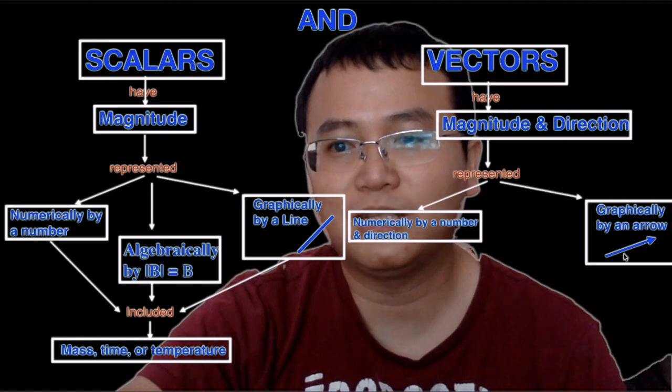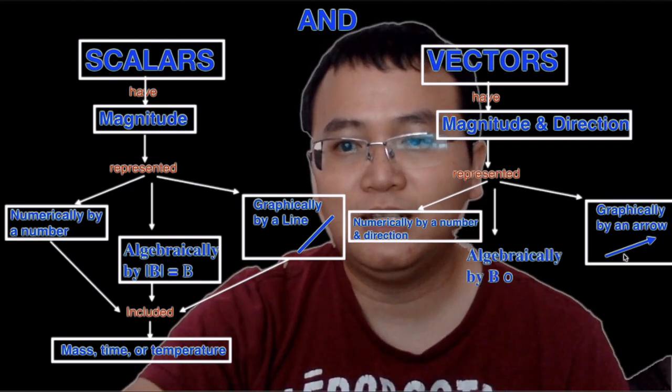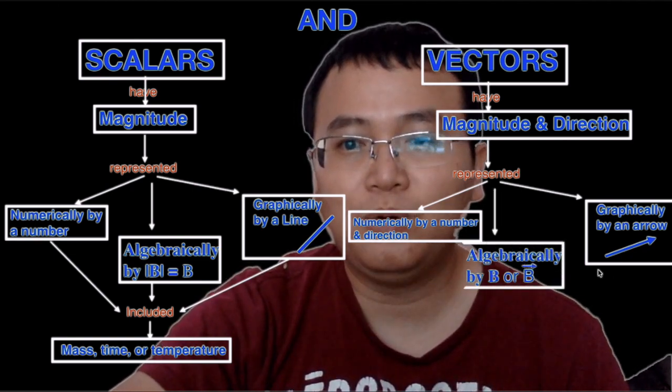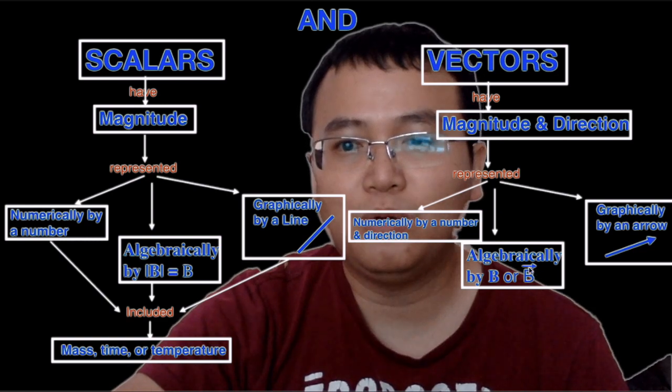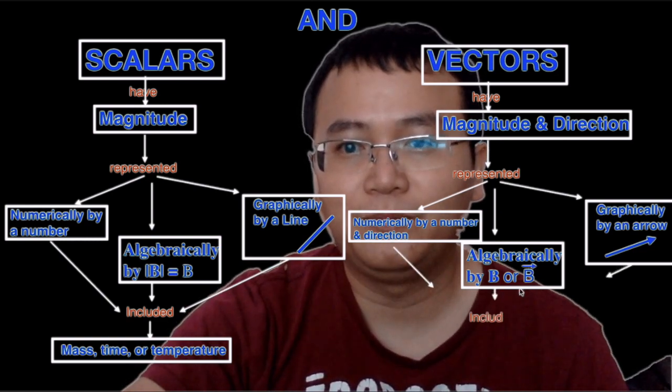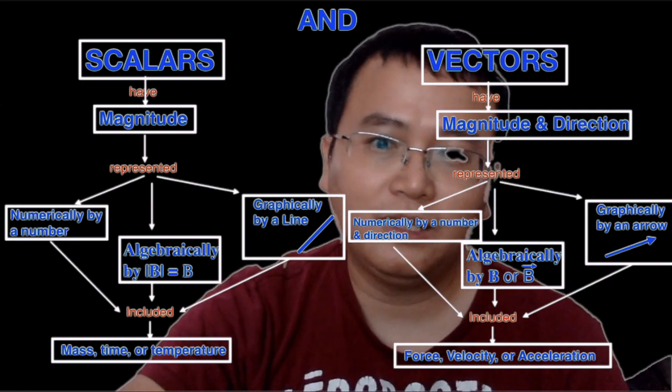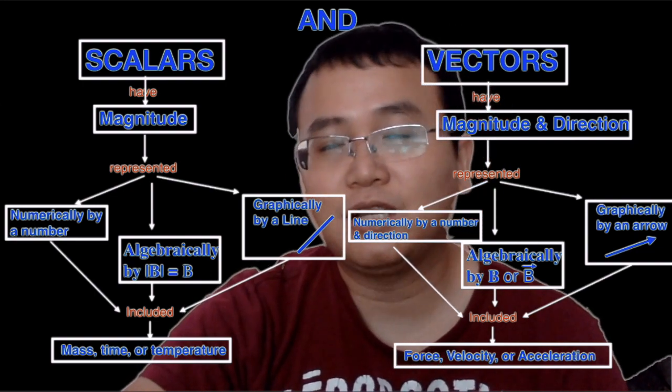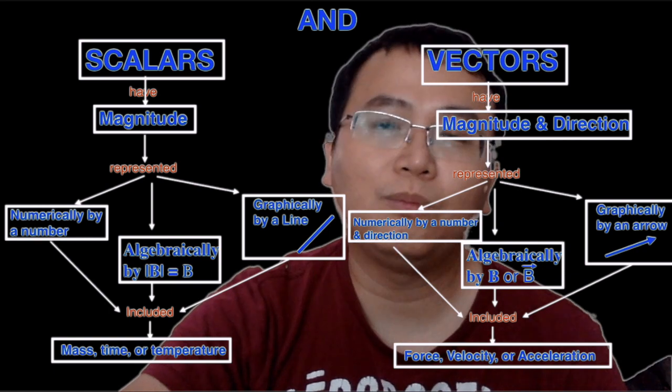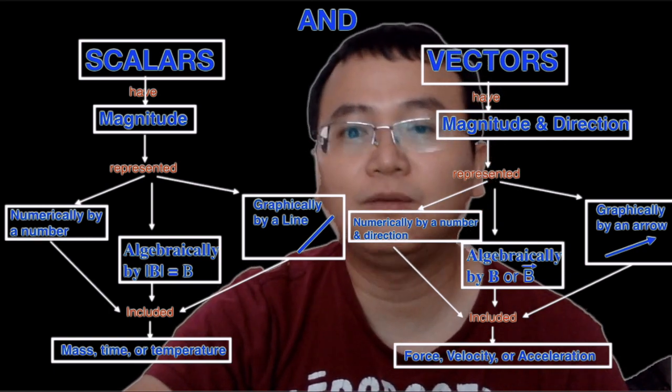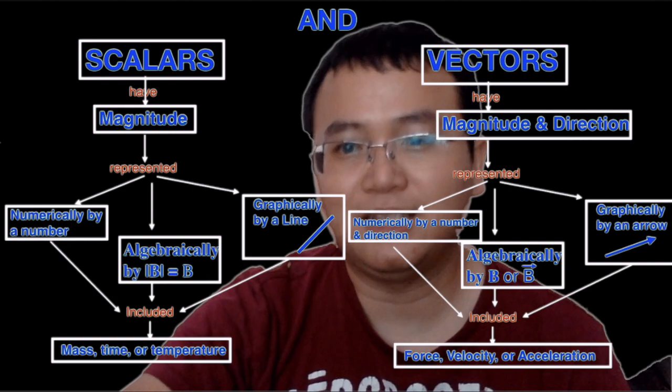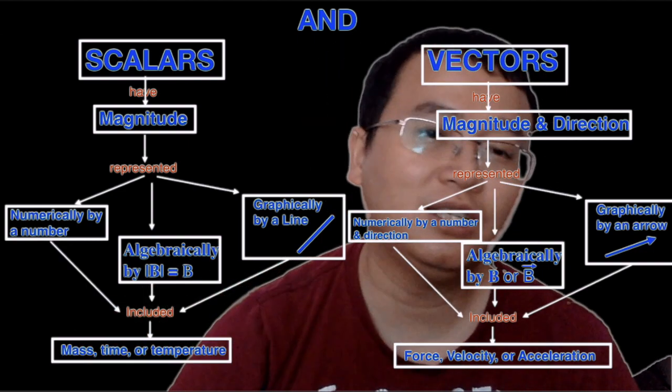That's where it's pointing at. Algebraically it's represented by a boldface symbol or a symbol with an arrow on top. So things such as force, velocity, acceleration have both magnitude and direction, so therefore they are vector quantities. Okay, that's pretty much it.